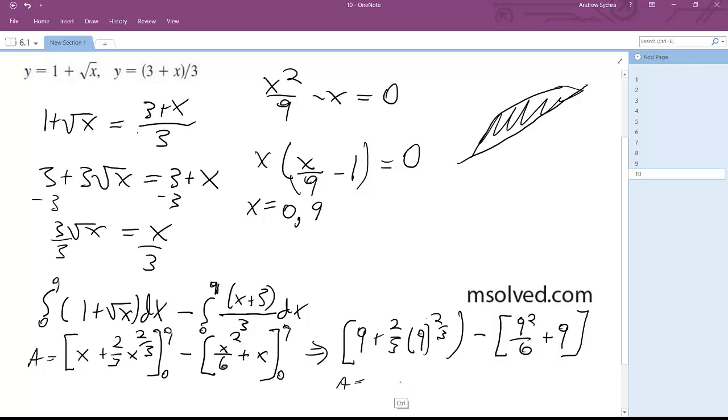Well let me keep going here, simplify this so it's going to be 9 plus 18 minus 81 over 6 plus 9. And finally, you simplify this further, you get 9 over 2, or 4.5.